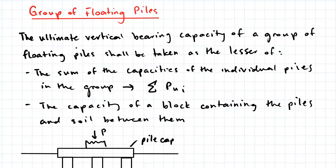The ultimate vertical bearing capacity of a group of floating piles shall be taken to be the lesser of the following: the sum of the capacities of the individual piles in the group, or the capacity of a block containing the piles and the soil between them.